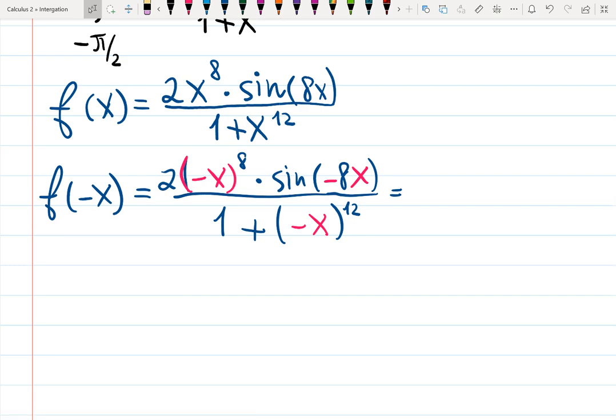Maybe nothing interesting is going to happen. Maybe this function is neither odd nor even and then you just have to integrate somehow. But actually, since all the exponents here are even, 8 and 12 are even, they destroy, if you want to see it this way, the negative sign. So the function becomes definitely 2x raised to the 8, right? Because negative x to the 8 is just x to the 8.